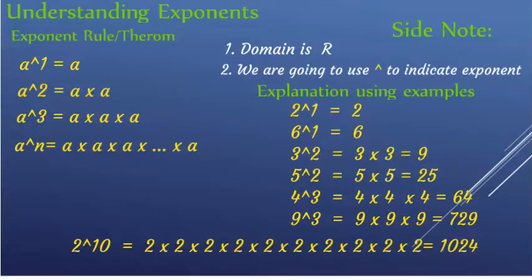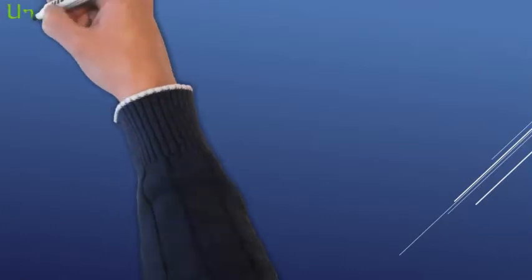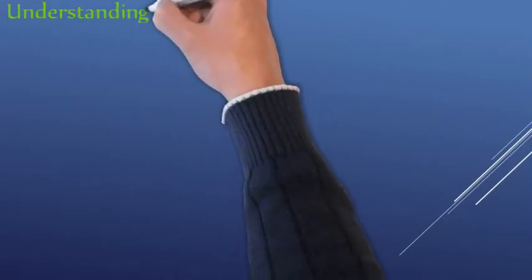The result is 256. The next result is 1024. Now let's take more examples and look at the rule of exponents.